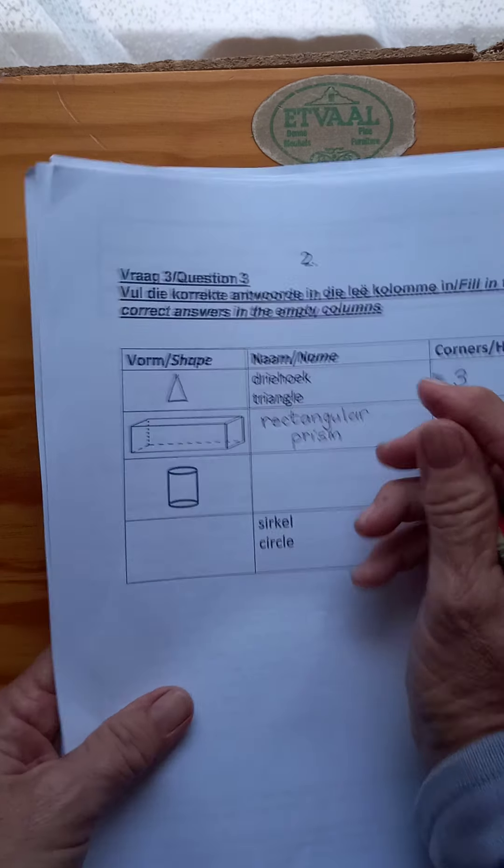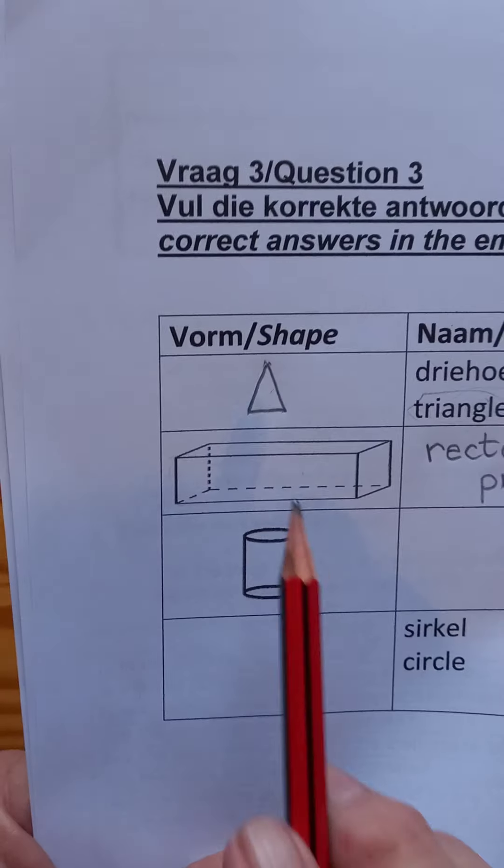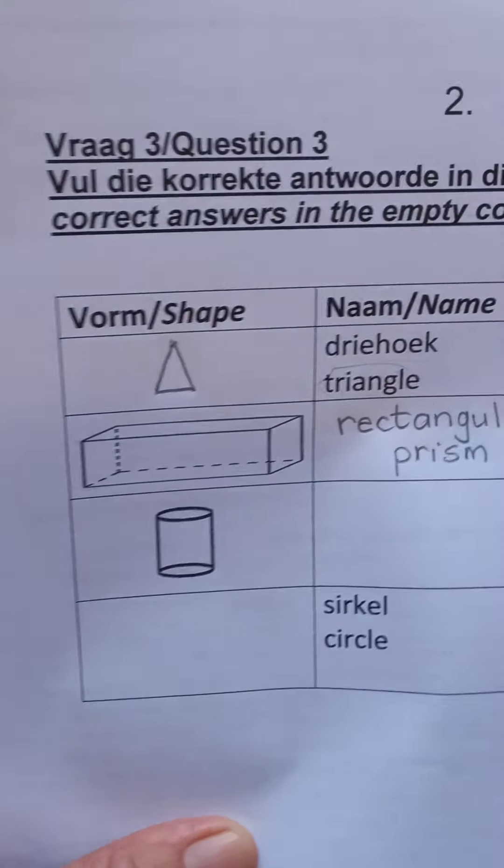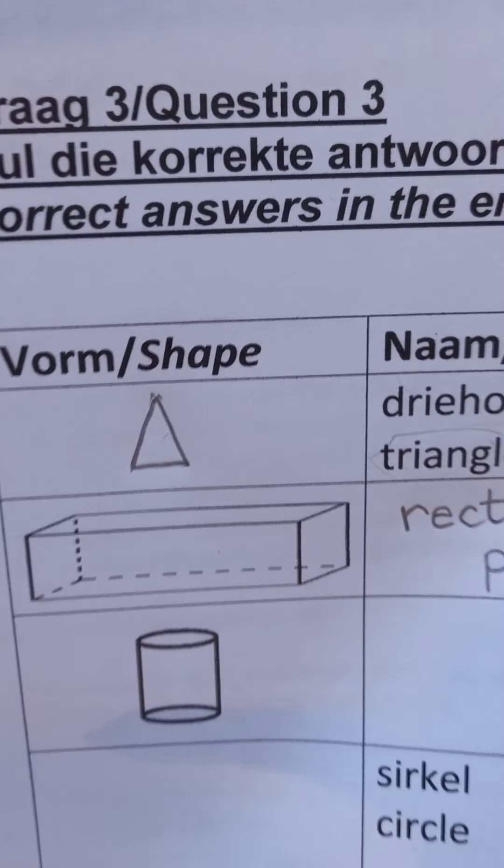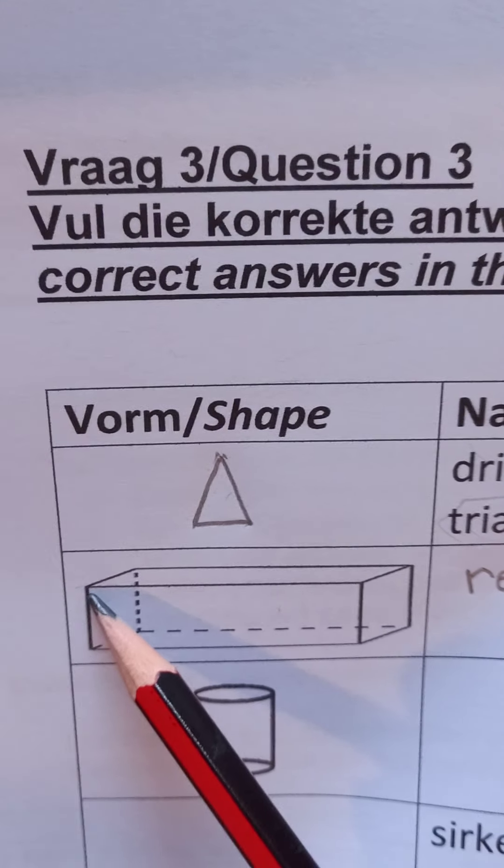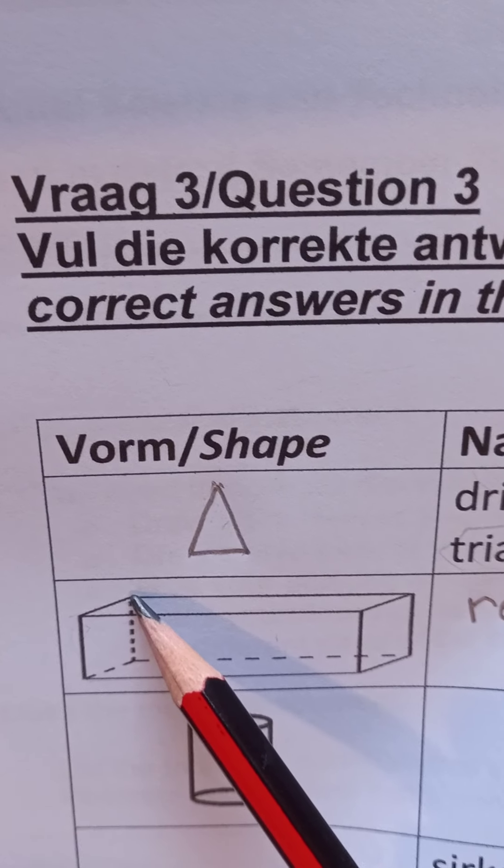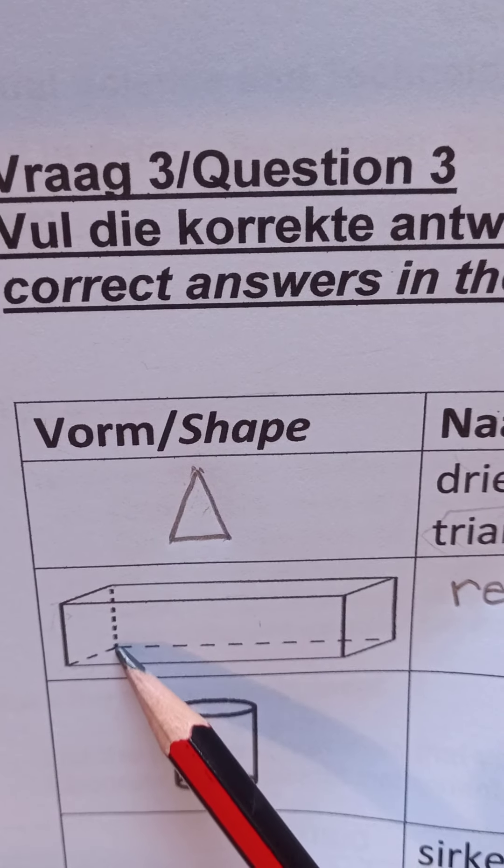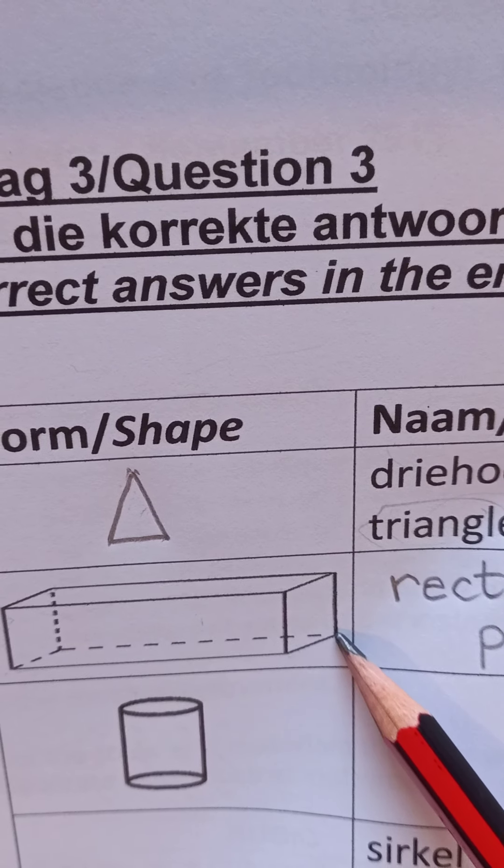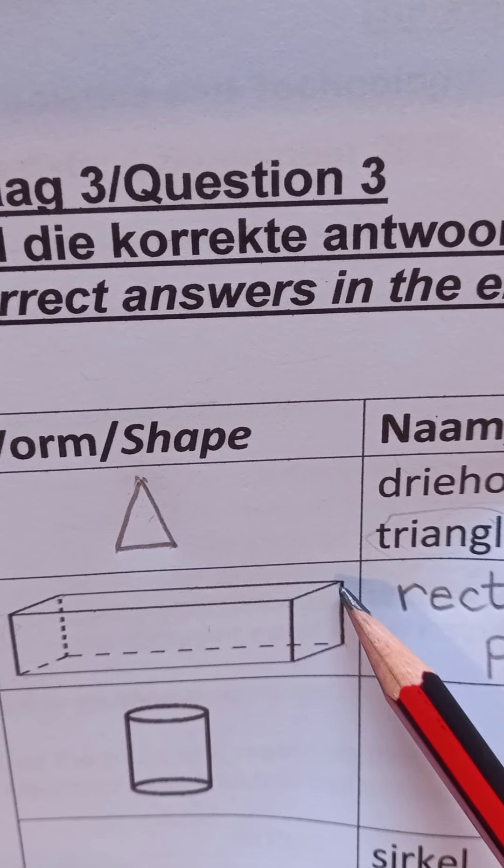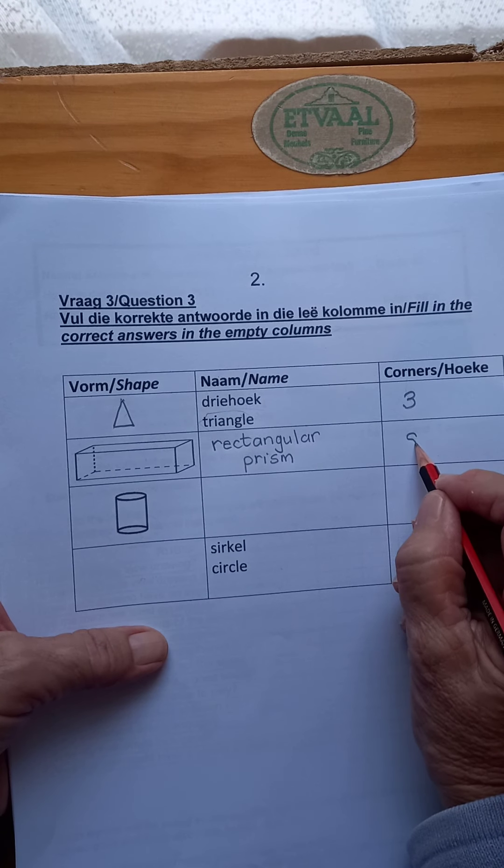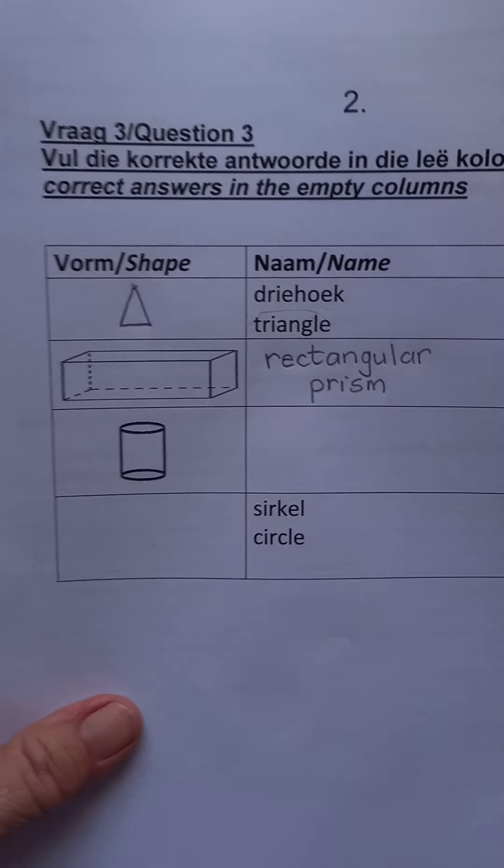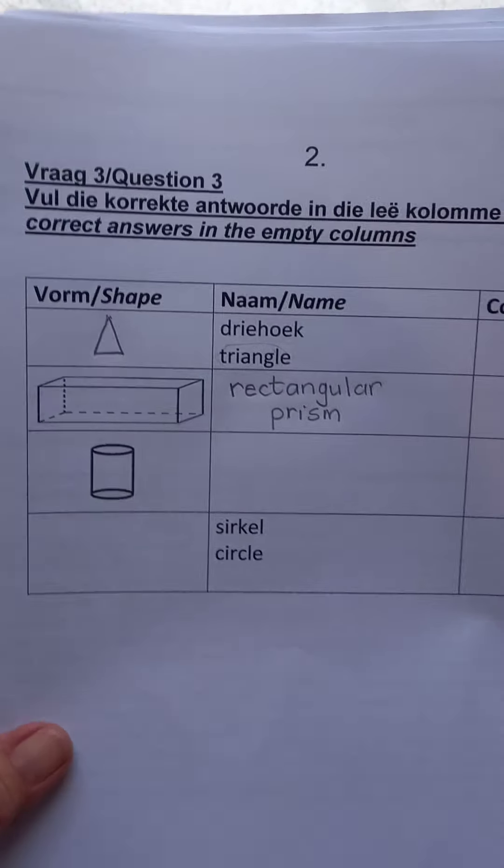When you have the picture of the 3D shape, you can work out how many corners it has. Let's look carefully, there is one, two, three, four, five, six, seven, eight. Eight corners. Now for the last two, I want you to go and look on that page about the 2D and the 3D shapes that I gave you.